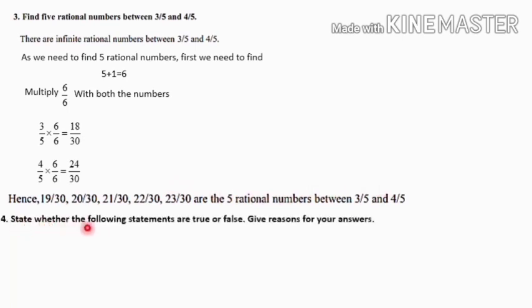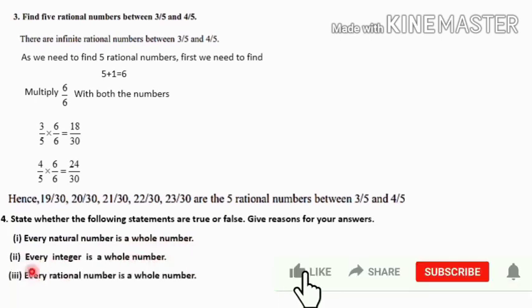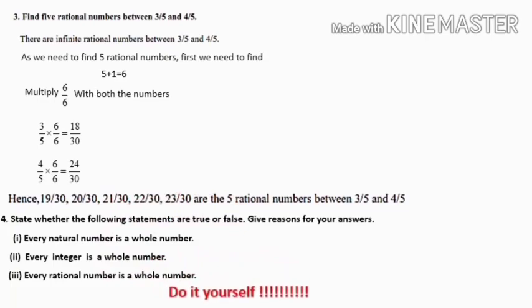Question 4: State whether the following statements are true or false and give reasons. First: every natural number is a whole number. Second: every integer is a whole number. Third: every rational number is a whole number. These questions come under the definitions of the classification of numbers — please do this as homework. In today's session we have learned the classification of numbers from natural numbers to irrational numbers. Go through all the definitions and exercise questions. If you have any doubt, please feel free to ask. Thank you for watching.